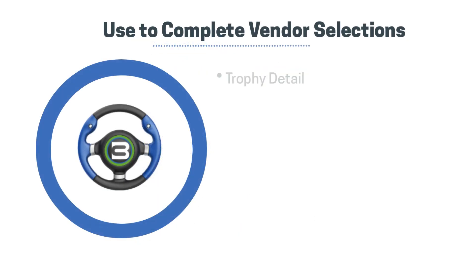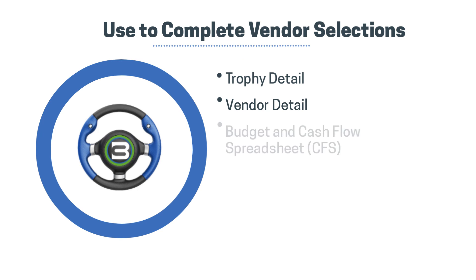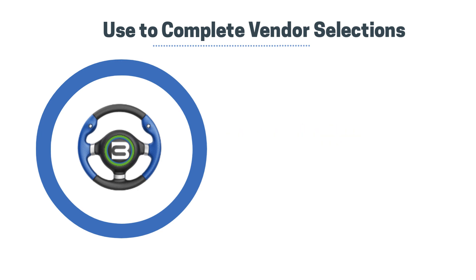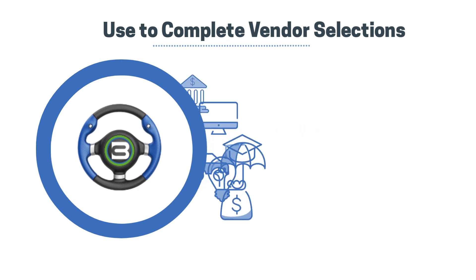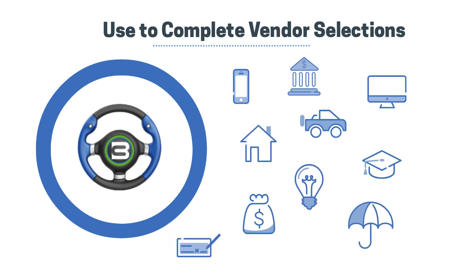This video explains how to use the Trophy & Vendor Details and Budget & Cash Flow spreadsheet to select your bank account, 401k, and vendor options. You will then finalize your choices by making your vendor selections.